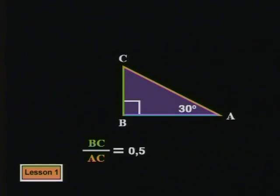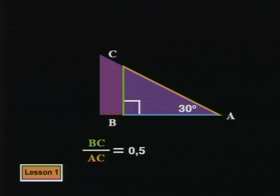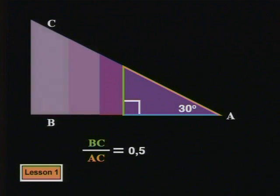So if we keep this angle at 30 degrees and this angle at 90 degrees, we can change the lengths of the sides, but the ratios of the sides will still have the same constant value.